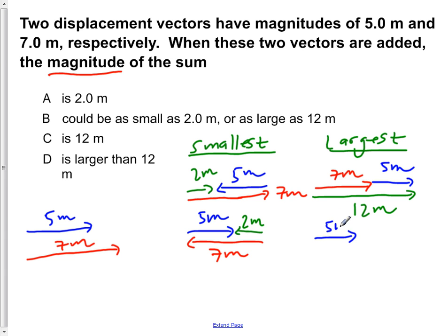Once again, but now we do 5 meters first, then we do 7 meters. We would still get a resultant of 12 meters. So here we found that our smallest possible value is 2 meters, and our largest possible value is 12 meters.